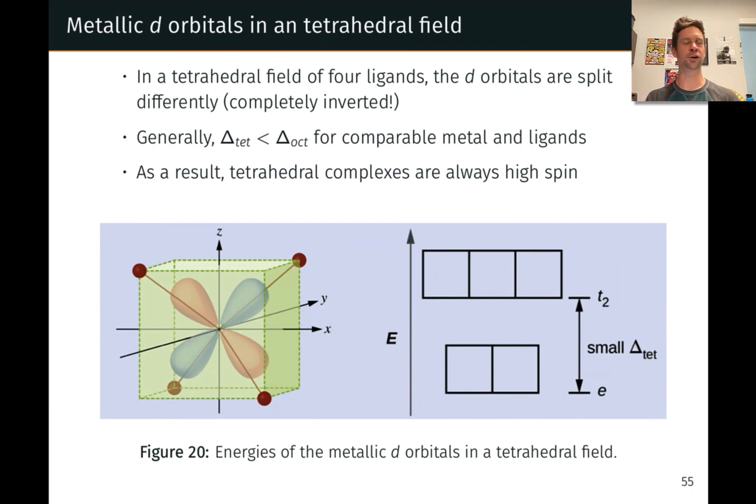One way to rationalize this is to recognize that the bond angles of the tetrahedral geometry are 109.5 degrees, and that's kind of weird from the perspective of the d-orbitals, which primarily have lobes at 90 or 180 degrees. And so the d-orbitals can kind of avoid the negative point charges, and the splitting tends to be relatively small.